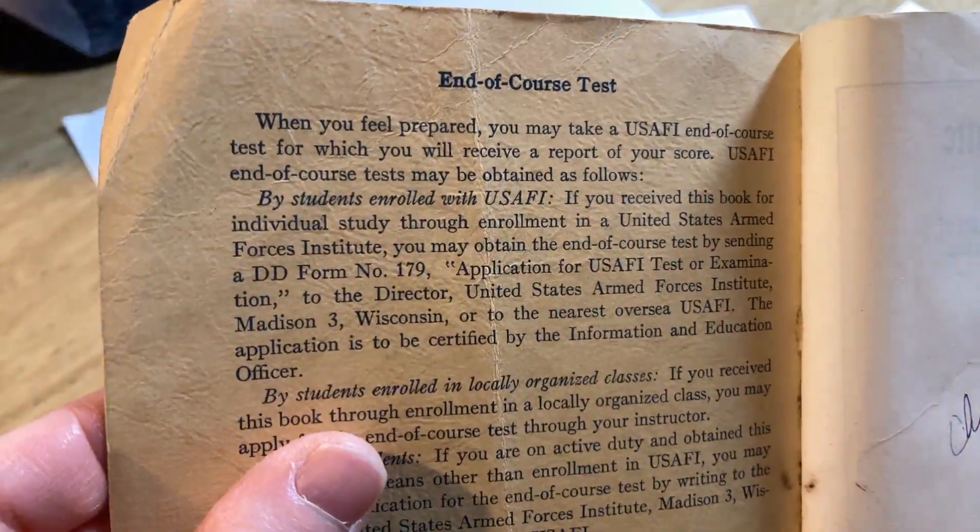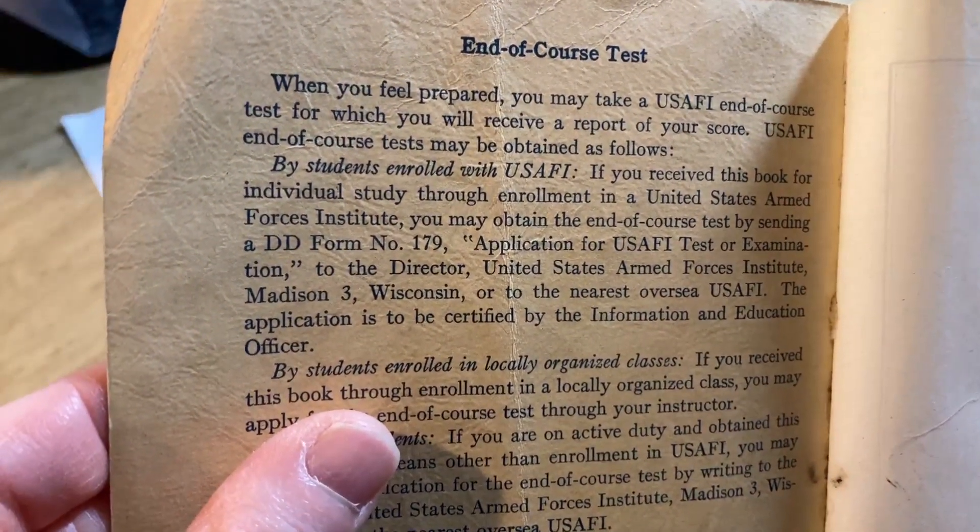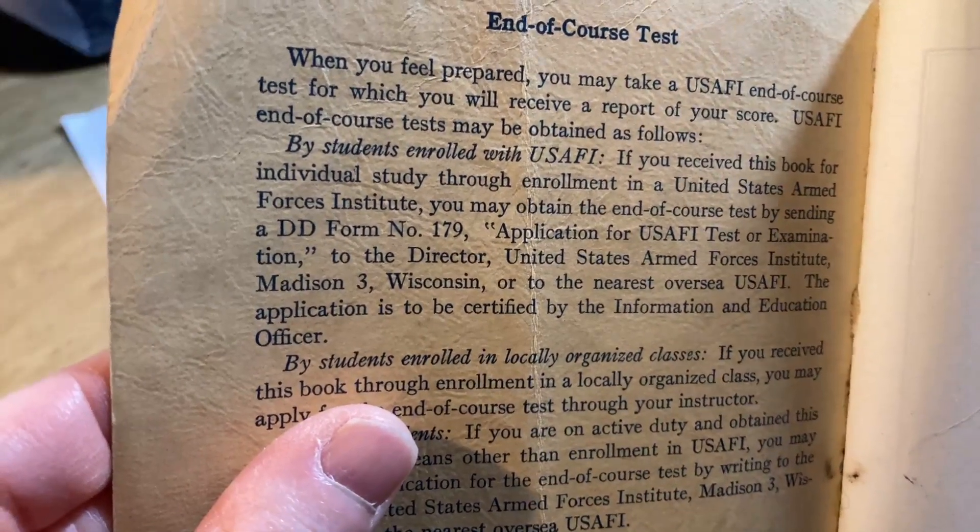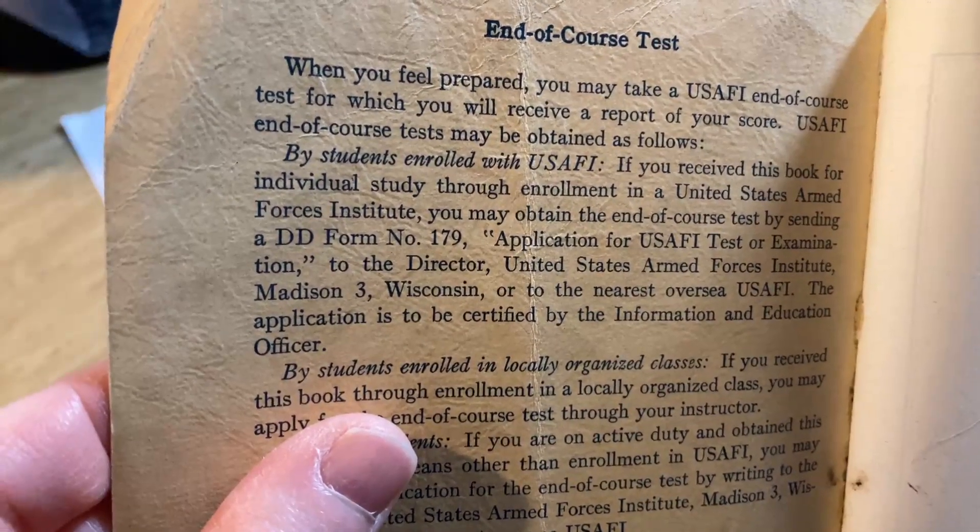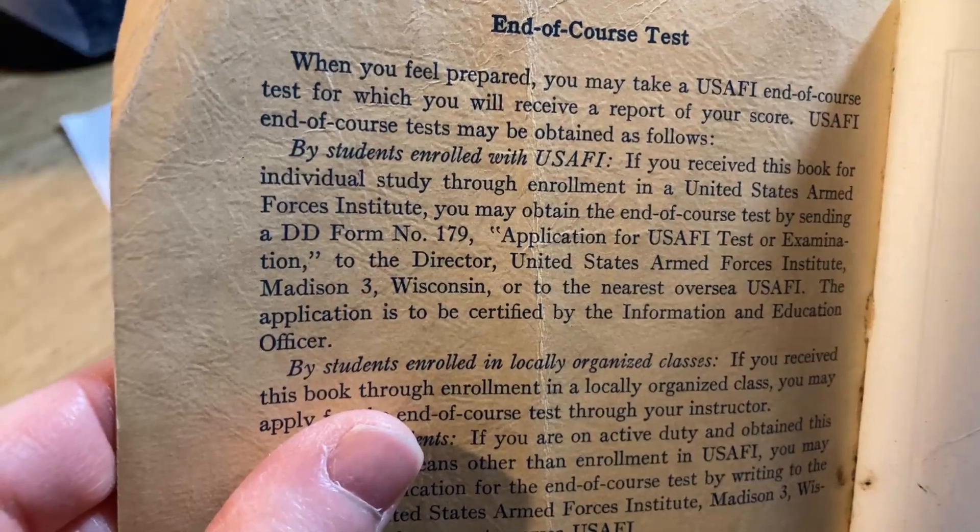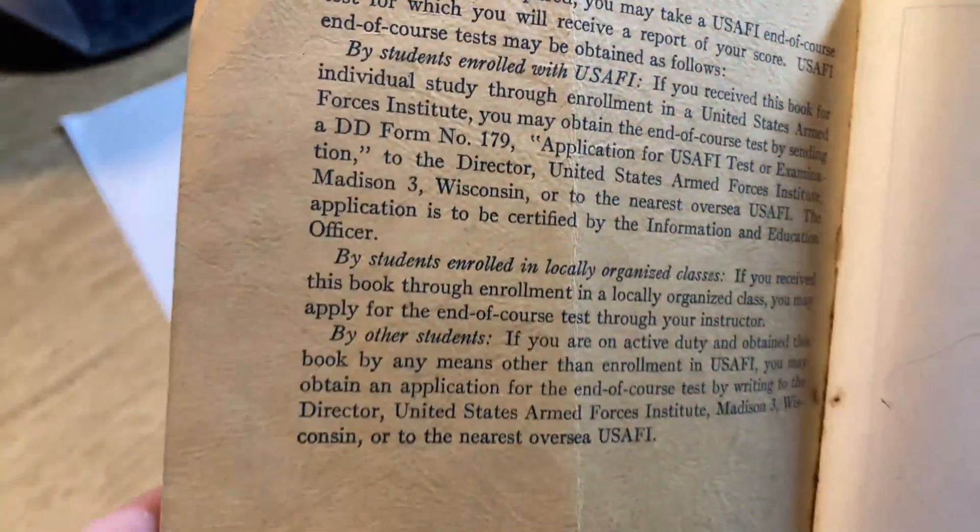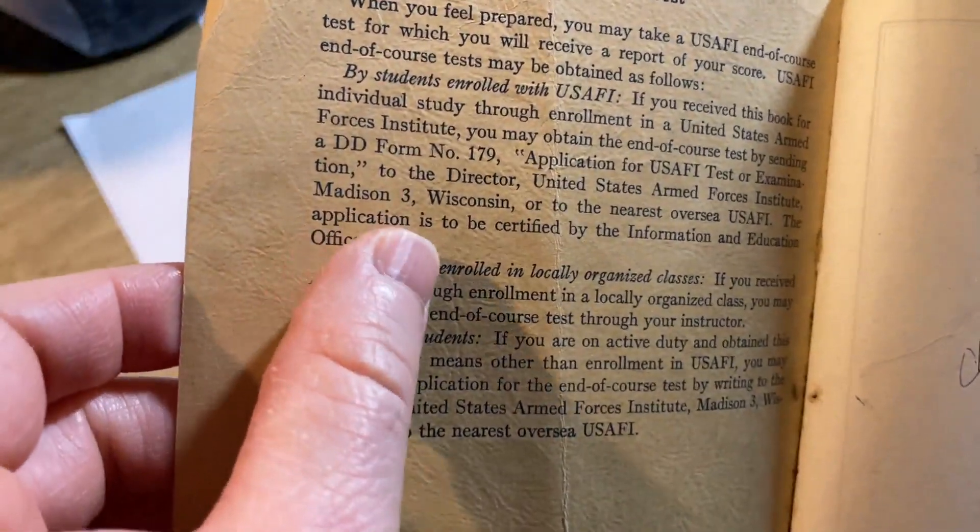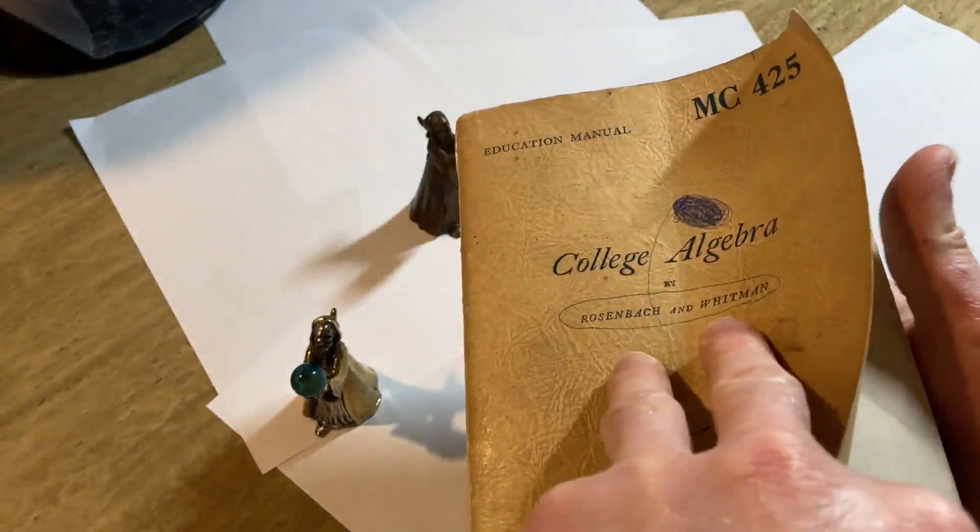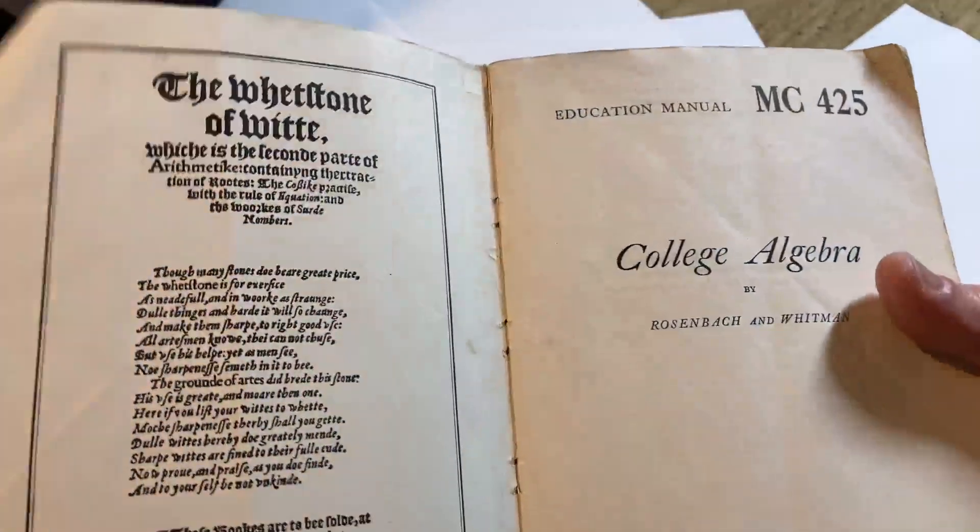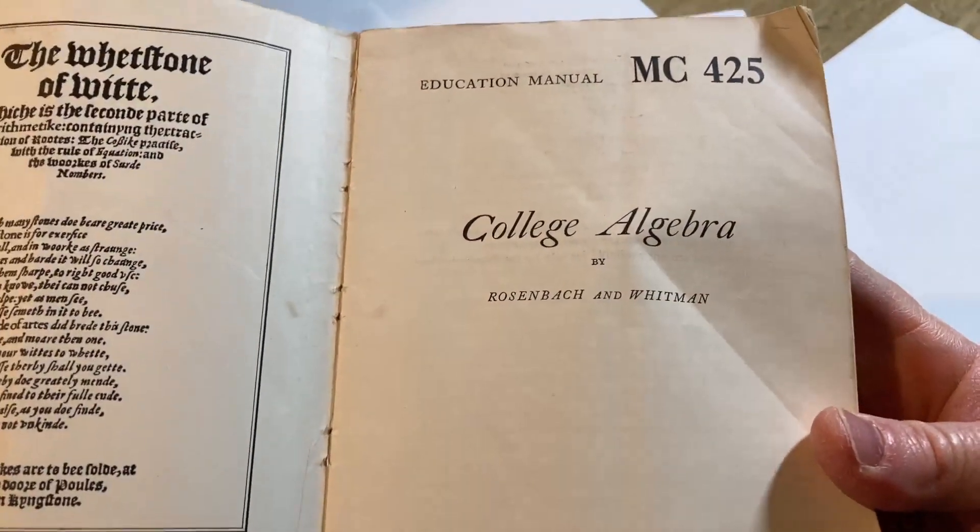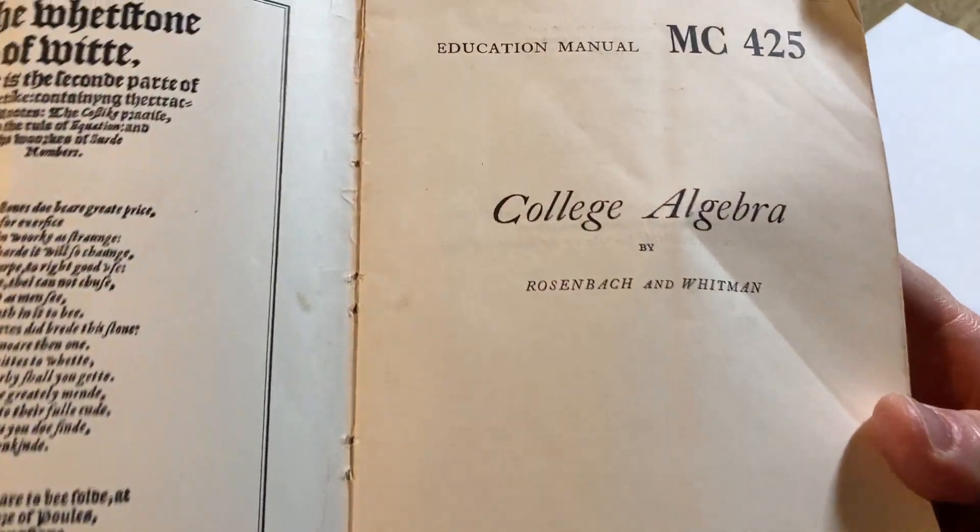What's this say? End of course test. When you feel prepared, you may take a USAFI, United States Armed Forces Institute, end of course test for which you will receive a report of your score. USAFI end of course tests may be obtained as follows. And here it gives you directions for obtaining the test. Madison, Wisconsin, that was the headquarters of the United States Armed Forces Institute. I really wonder what happened to them. There's not much information about them on Wikipedia. It's just like a little blurb. It doesn't really tell you much.